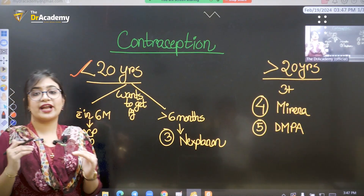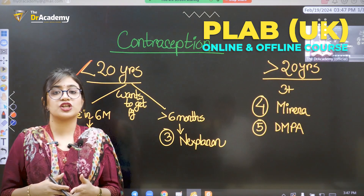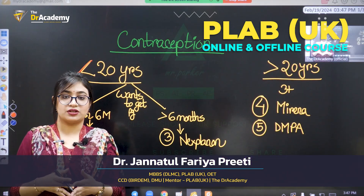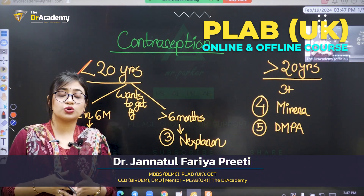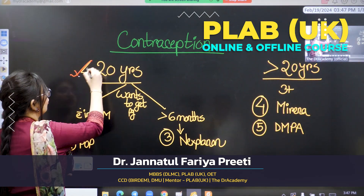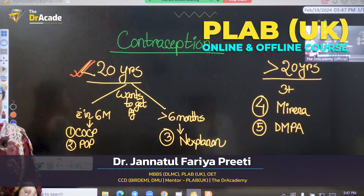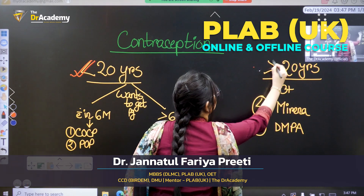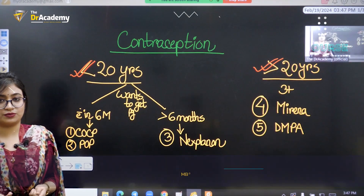When you look at the patient with contraception, the first thing to see is the patient's age. Like a patient's age of 20 years — we would consider contraception from 20 years.